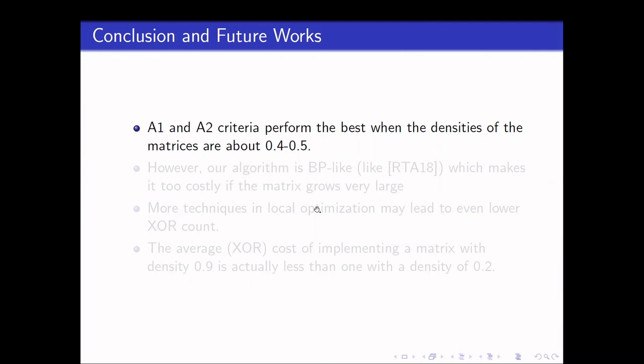In conclusion, A1 and A2 criteria perform the best when the densities of the matrices are about half. While the savings for these matrices right now are just a few XORs, that's because the matrix size itself is not large. The eventual goal is actually to target larger matrices such as the ones used in low MC cipher. In those cases, the savings will become significant.